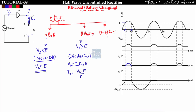From pi minus theta to pi, the supply voltage is again less than the battery EMF. In this case the diode will be reverse biased — open circuited — so i_naught will be zero, and the output voltage equals E only. So from pi minus theta to pi we are getting V_naught equal to the battery EMF.